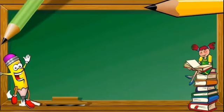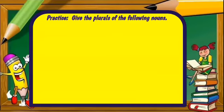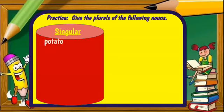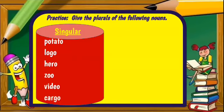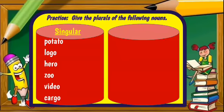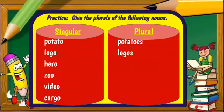Now let's move on to some practice on what we just learned. Let's give the plurals of the following nouns: potato, logo, hero, zoo, video, and cargo. Potato becomes potatoes. Logos. Hero becomes heroes — notice those words take ES. Zoo becomes zoos — just add S. Video — plural videos.